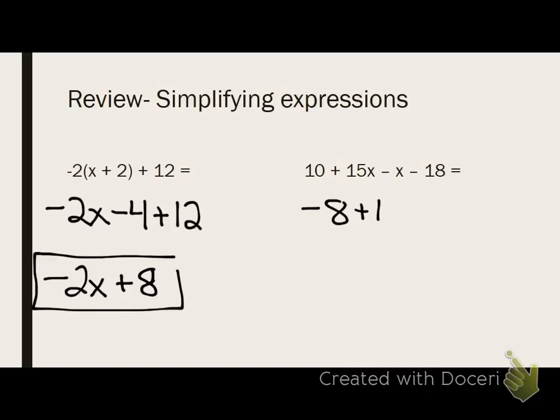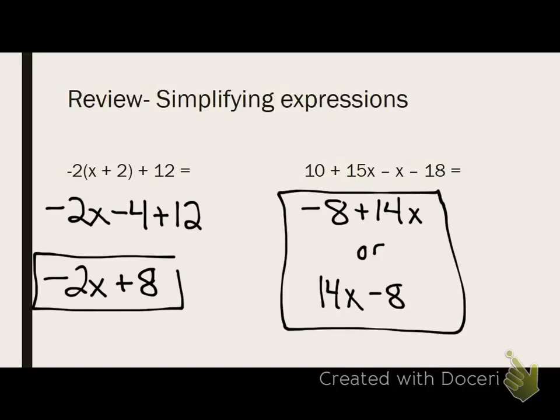Got it? All right, now on the next one, I'm just combining my like terms. You can write it either way. Did you get it? All right, so basically what we did here is 15x minus x. There's an understood 1, so 15 minus 1 is 14. 10 minus 18 is negative 8. That negative sign is in front of the 18. So it's different signs, subtract, and take.